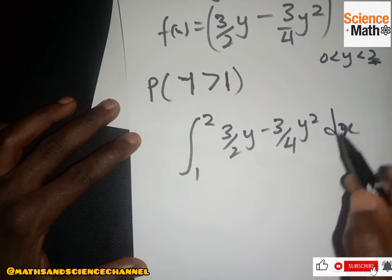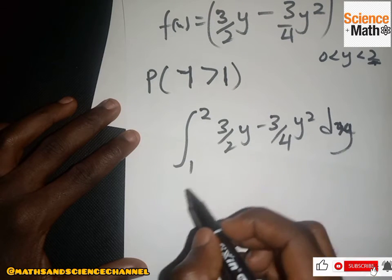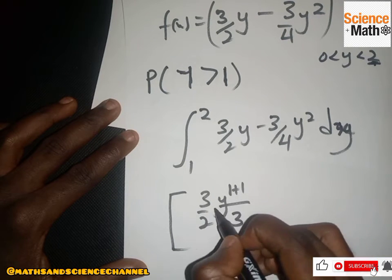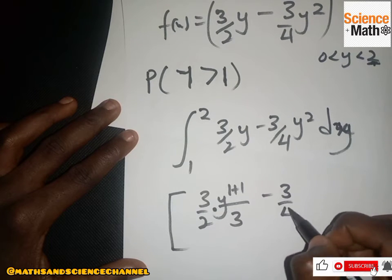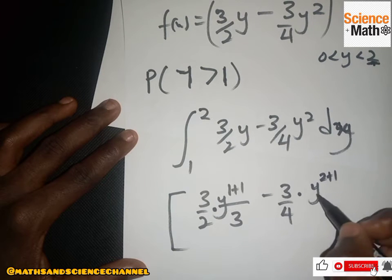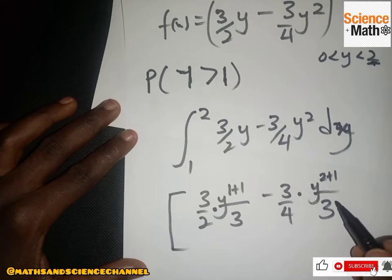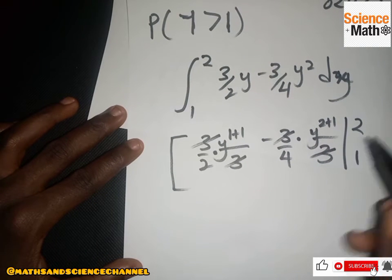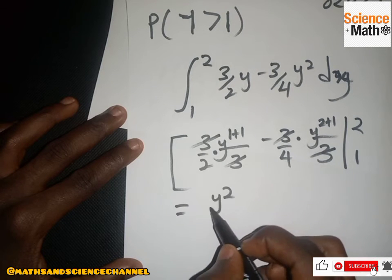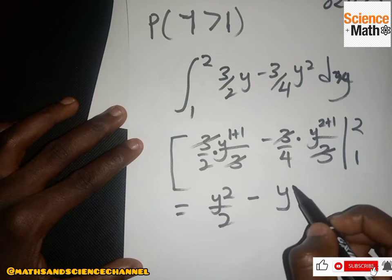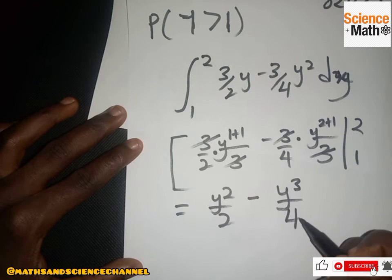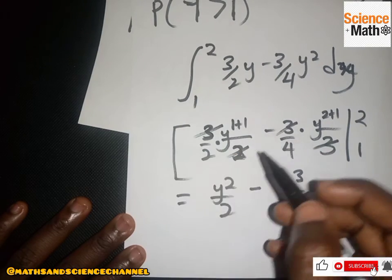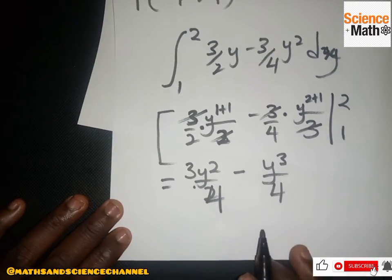Integrating (3/2)y gives (3/2)(y²/2) = (3/4)y², and integrating (3/4)y² gives (3/4)(y³/3) = y³/4. The threes cancel, leaving us with [y²/2 - y³/4] evaluated from 1 to 2. Wait — we have [3y²/4 - y³/4] from 1 to 2.